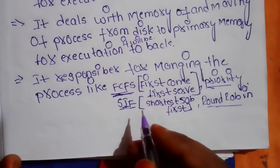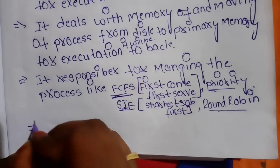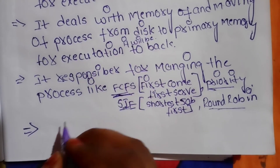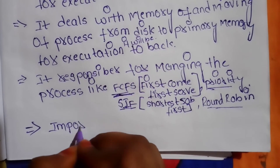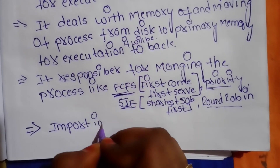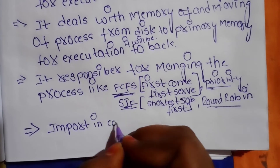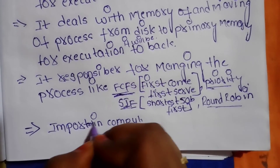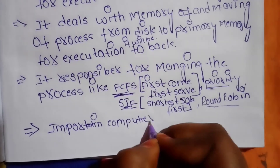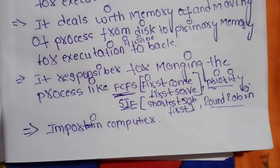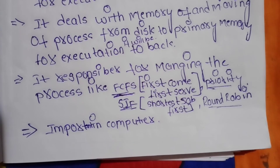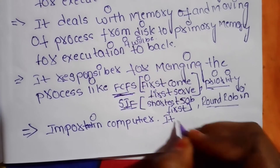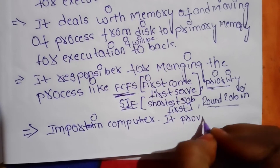The next layer is the I/O buffer. It is an important layer in the computer. It provides the user with interaction with the system and ensures the output is given correctly.